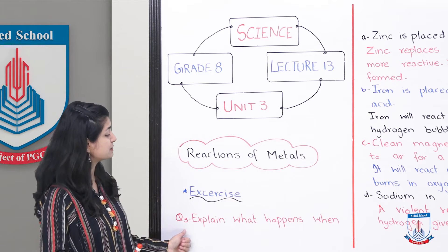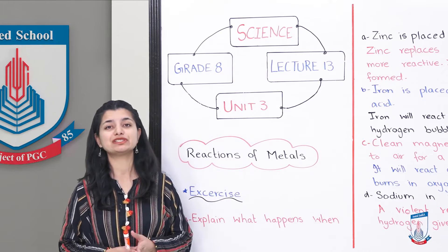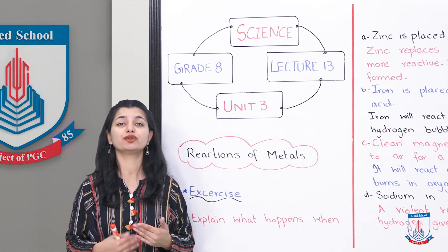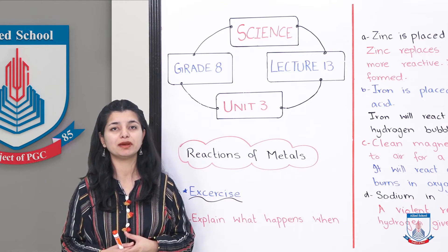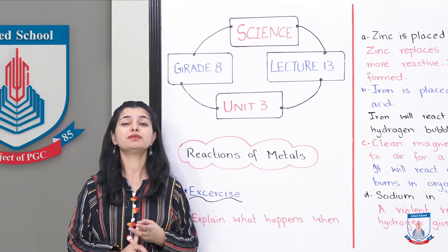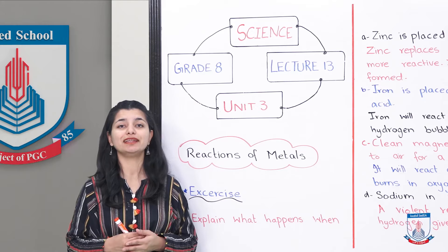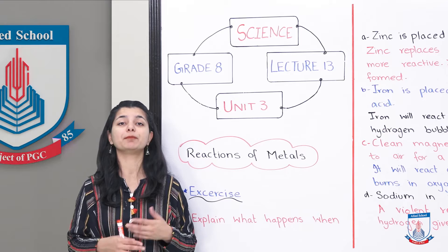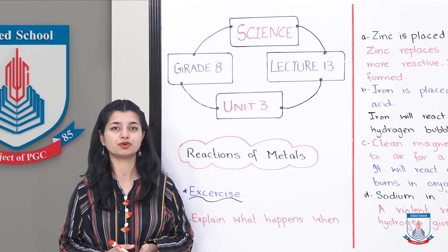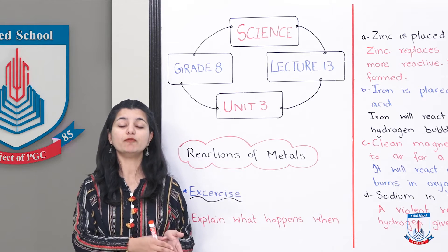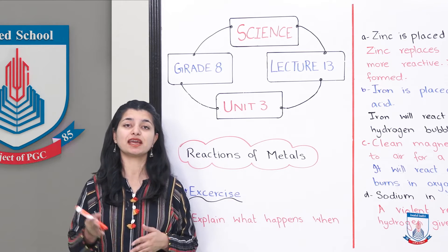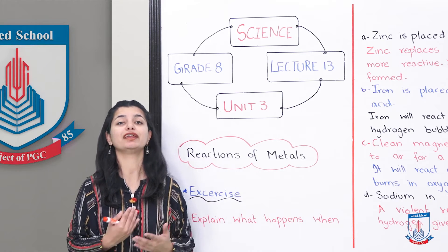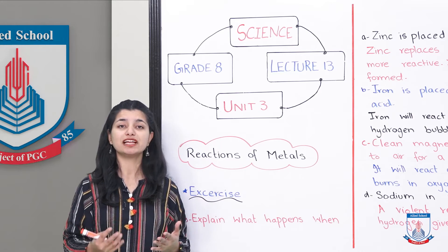Question number three says: explain what happens when? There are 4 different reactions given — if you react this element in this condition, what will happen? We have to answer based on what we have read about the reactivity series. Page number 34 has a full table. We have also understood that. So when you react any metal with water or another metal, what outcomes do you get? You can go back to those lectures and pages for help. Let's begin with part A.